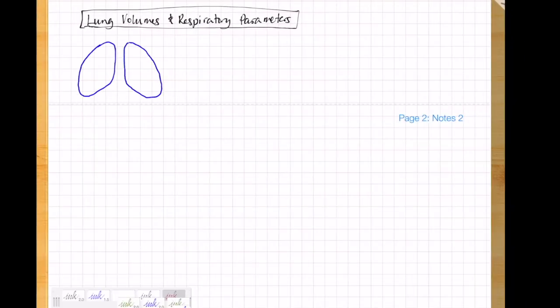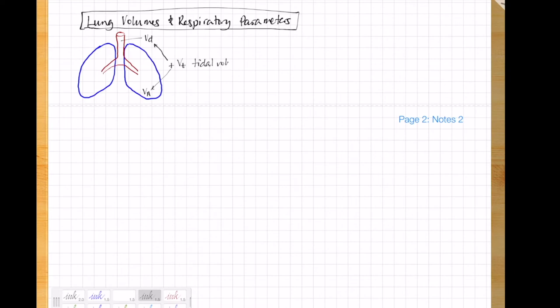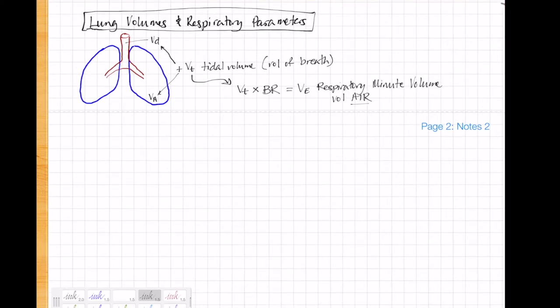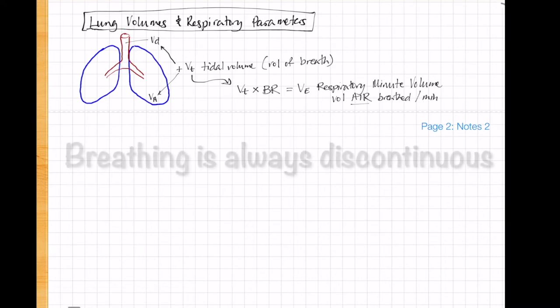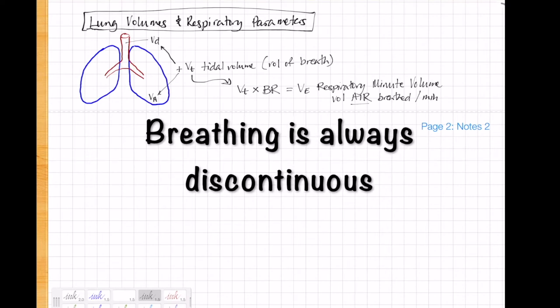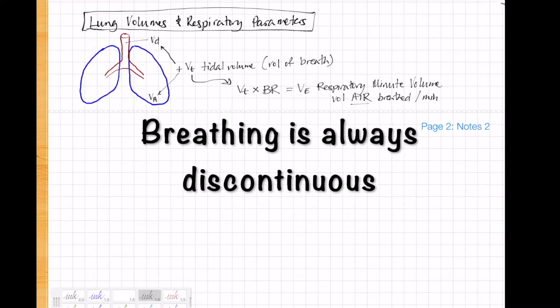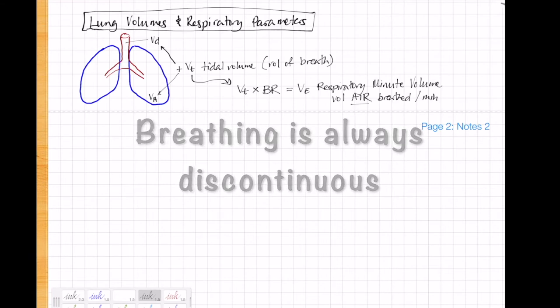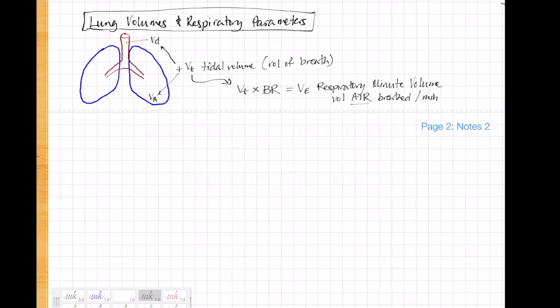More about lung volumes. VD plus VA add together to give us tidal volume, or the volume of one breath. VT in turn times the breath rate gives us respiratory minute volume, or the volume of air breathed per minute. It's a good time to pause for a moment to emphasize that breathing is always discontinuous. Well, most of the time. Animals take discrete breaths, and there's a certain volume that animals can take in at a certain frequency. So even if the flow over the lungs or gills is one way or seemingly continuous, all animals have a breath rate and generally take breaths, except maybe ram ventilators.